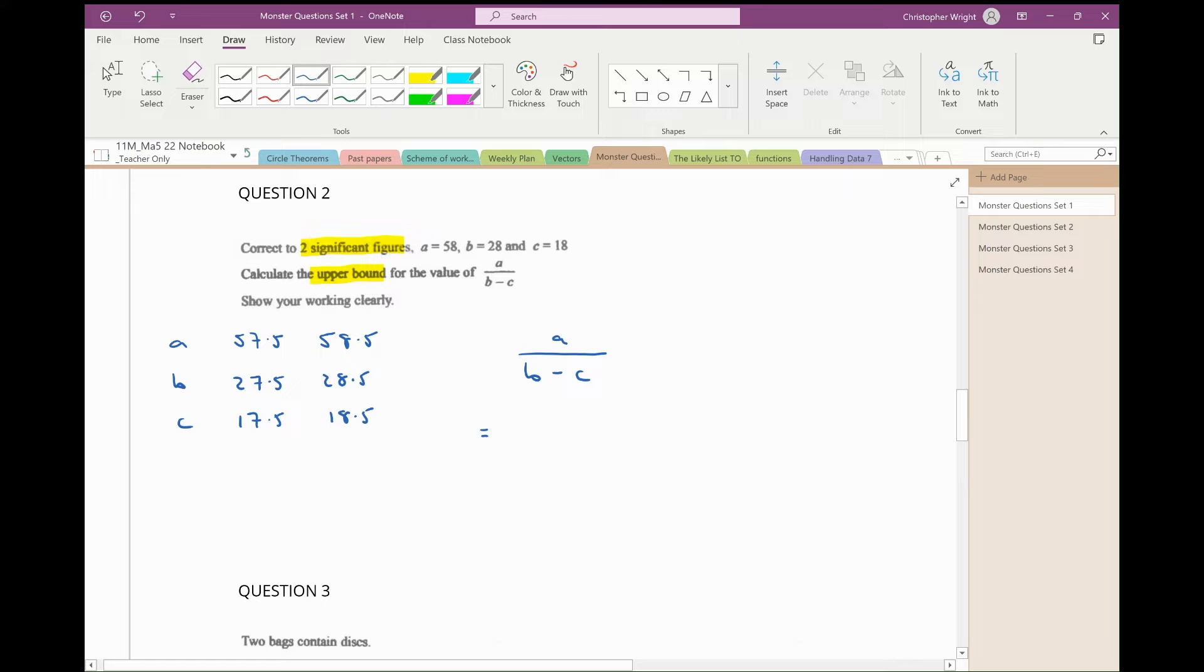Now we'd like this expression to be as large as possible. So we're going to have the largest possible number on the numerator and the smallest possible number on the denominator. To get the smallest possible number, I want the difference between B and C to be as small as possible. So I'm going to find the lowest B and the highest C. And that's what I'm going to put in my calculator to get the answer that the upper bound for that expression is 6.5.